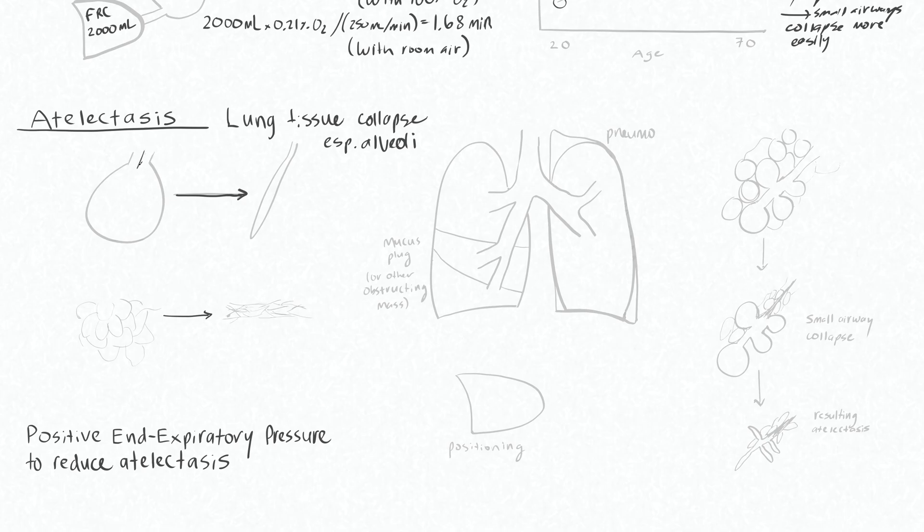Atelectasis will throw off our balance of ventilation to perfusion. So here's an alveoli, and then there will be a capillary going by it. We say the perfusion is Q, and ventilation is V. If this alveoli is poorly ventilated for some reason, eventually all of the gas that's in this alveoli will leave, and it will collapse.